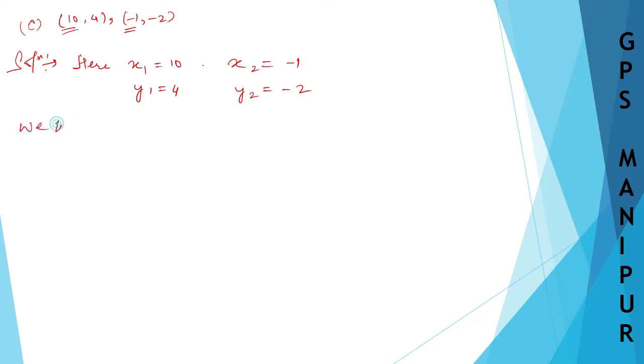We know the distance between x1, y1 and x2, y2. The formula is: square root of (x2 minus x1) whole square plus (y1 minus y2) whole square. This is the formula.